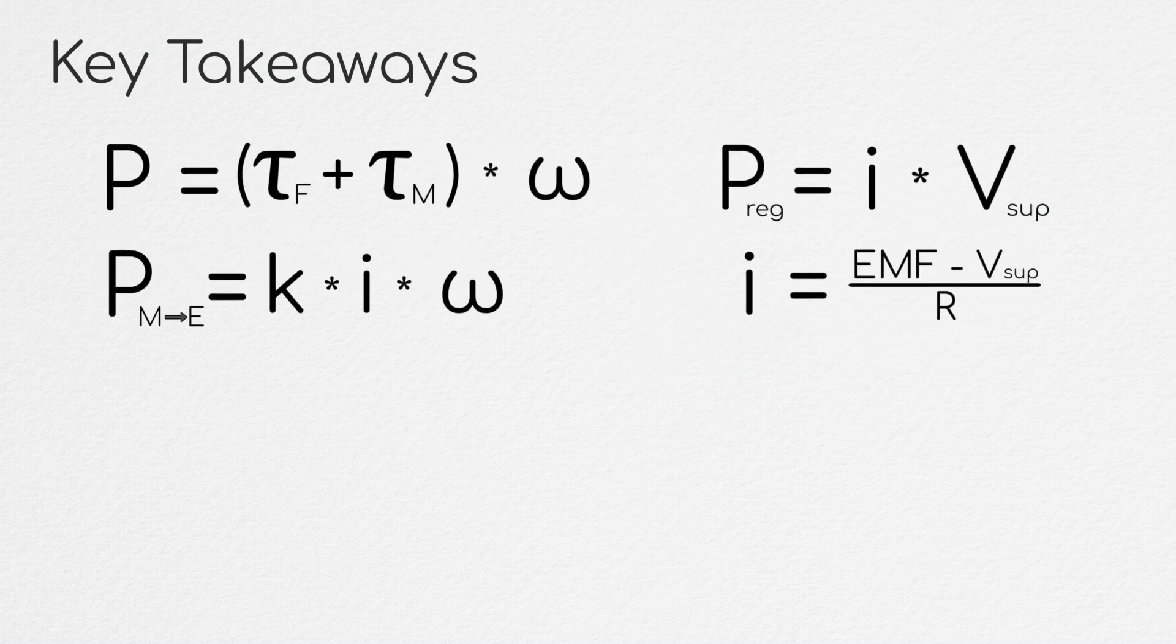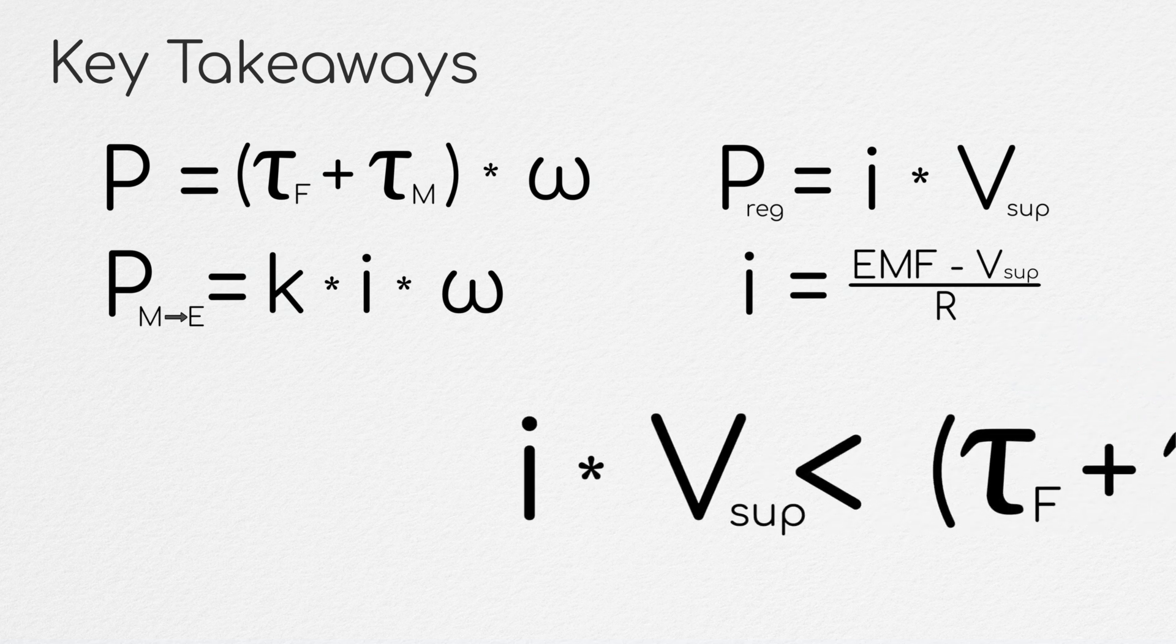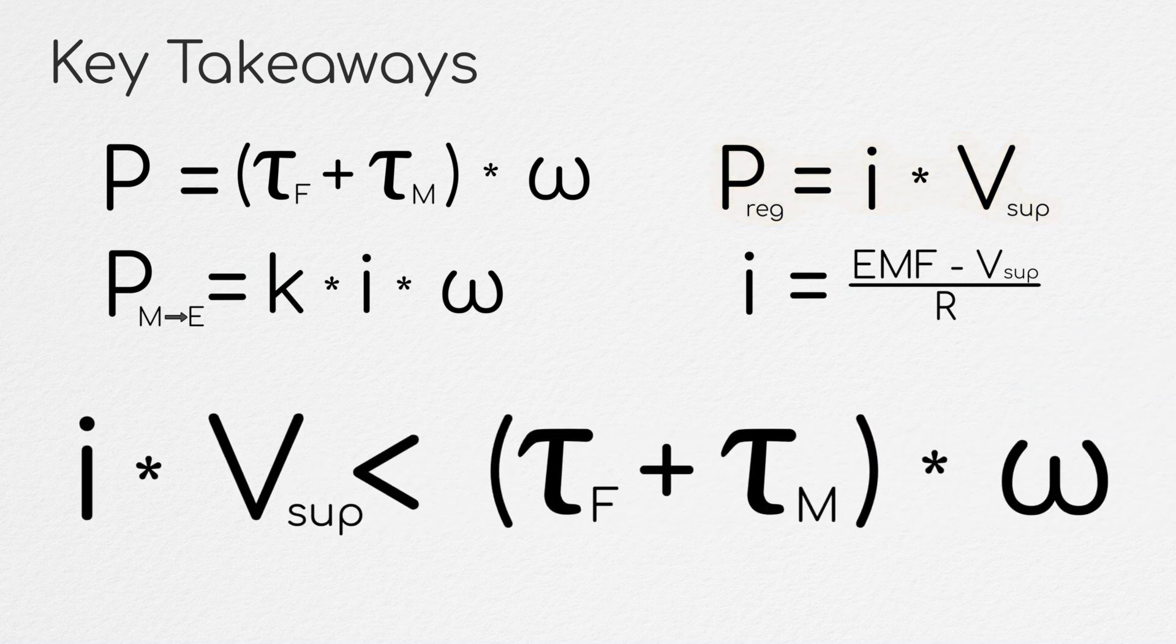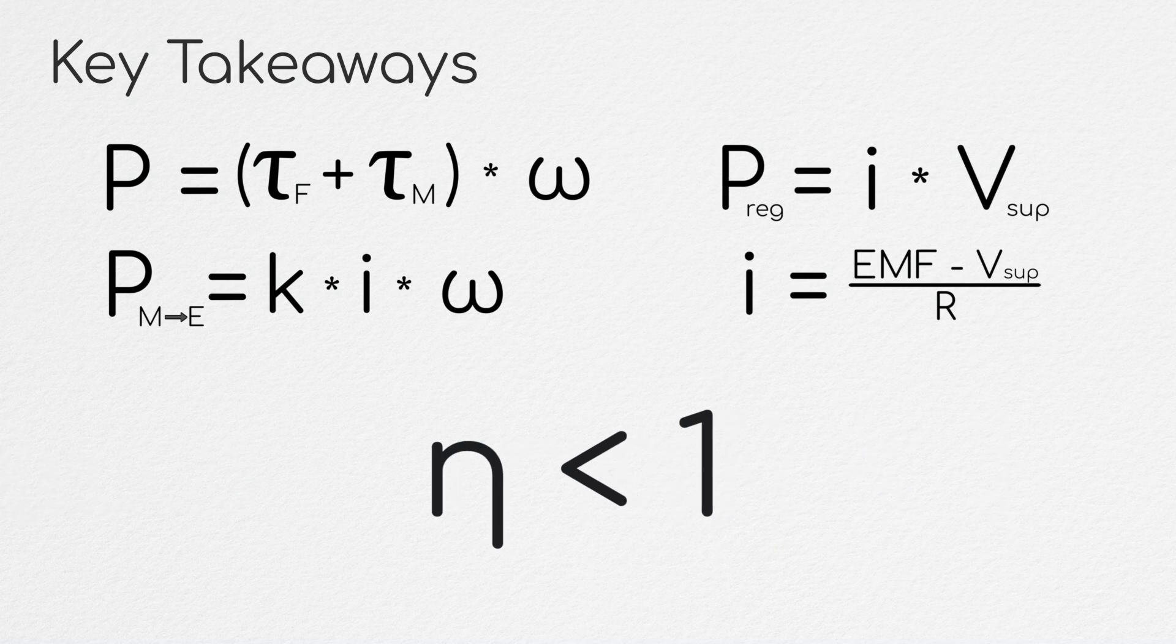First of all, since real world systems all have losses to friction on the mechanical end and resistance on the electrical end, we can say with certainty that the power flowing back into the supply will always be less than the power being put in on the mechanical side. Another way to say this is that in real systems, generation cannot be 100% efficient.